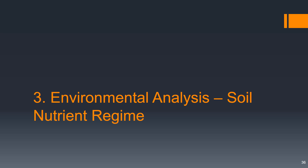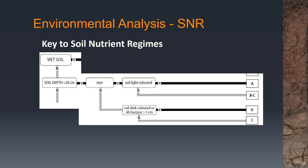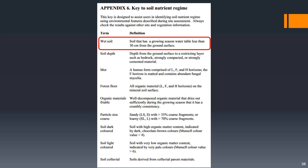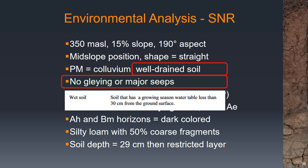Once we've keyed out the soil moisture regime it's a similar process to key out the soil nutrient regime. Here's a subset of the key. We start off with: is it a wet soil? That might seem a little vague but there's a definition — a wet soil has a growing season water table less than 30 centimeters from the ground surface. In our case we had a well-drained soil and no gleying or signs of major seeps, so this was not a wet soil.